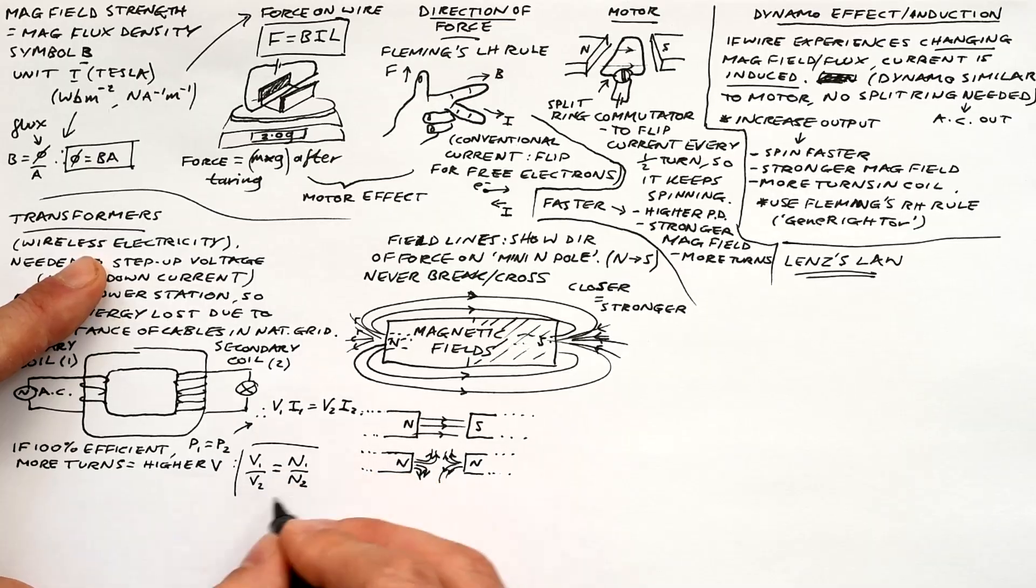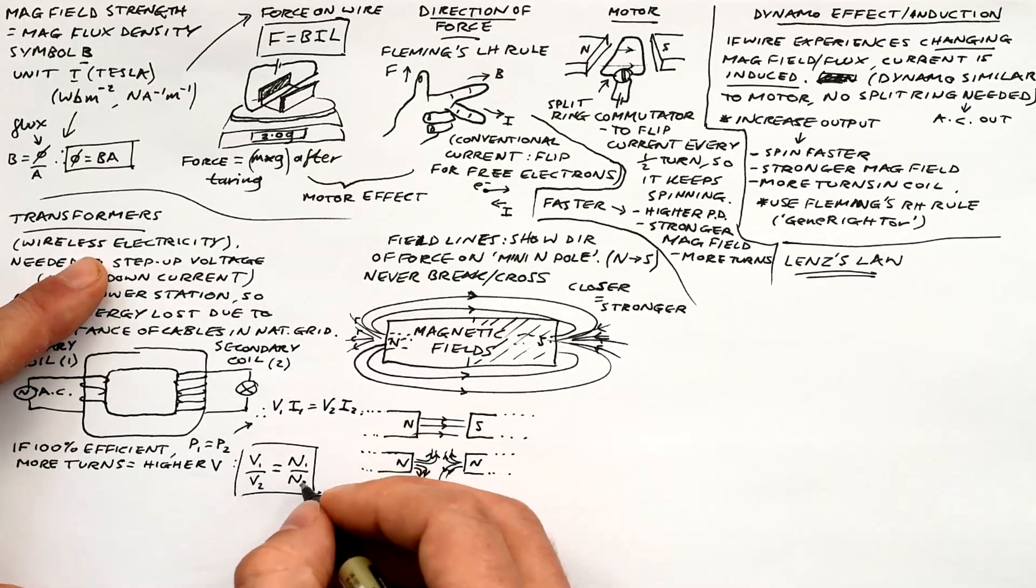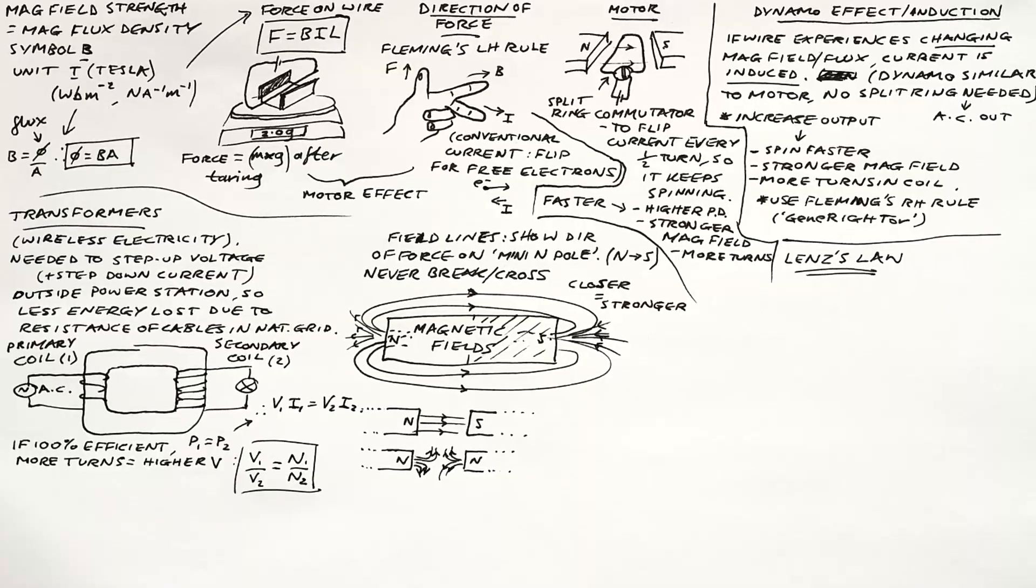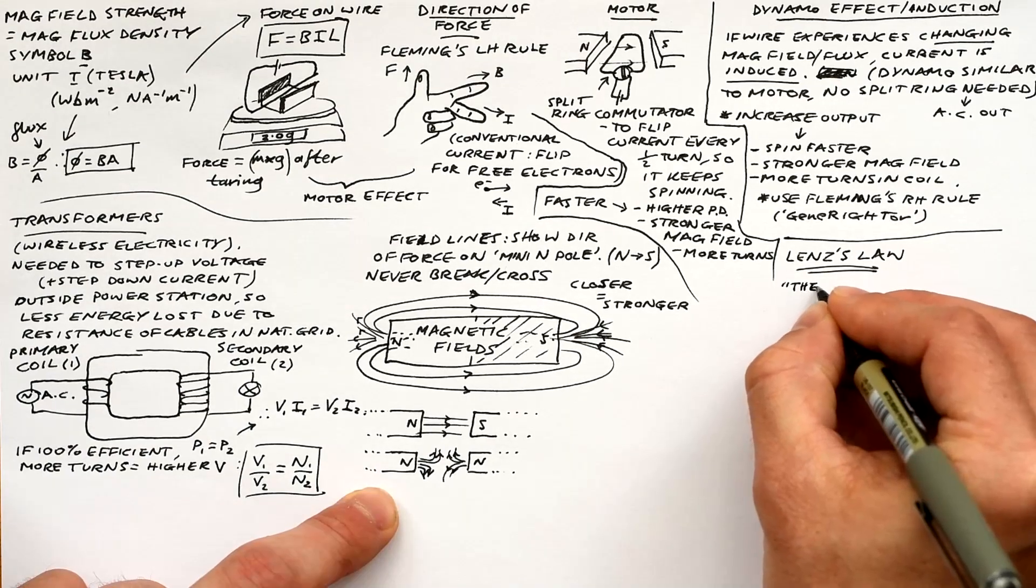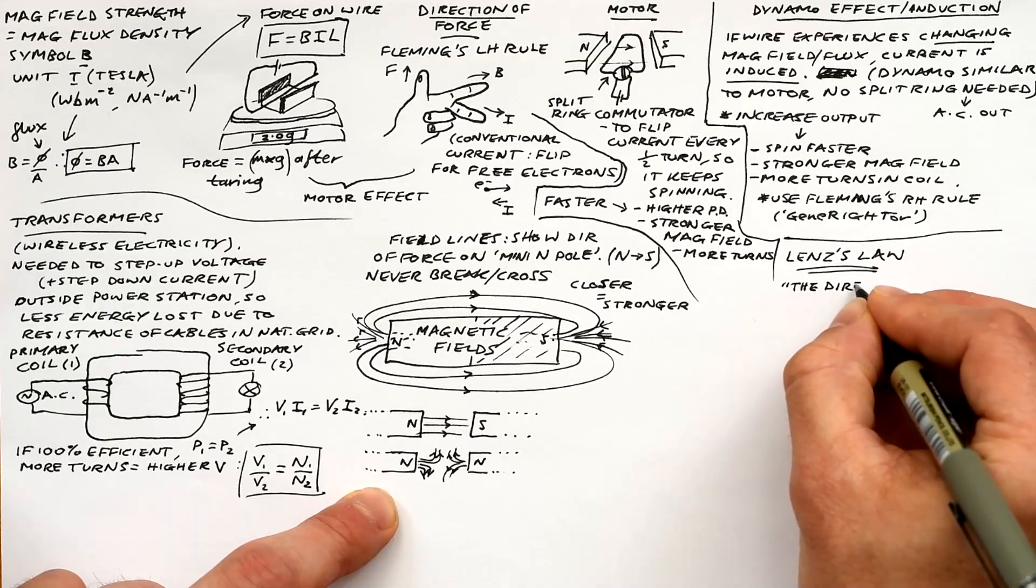And at A level, you need to know that the voltage steps up because the more turns we have, the more flux we're capturing with that coil, as it were. There's one more thing about the structure of transformers that you need to know for GCSE. I'll write that down in a few minutes. Okay, that's pretty much it for GCSE. Everything from now on is just going to be A level.